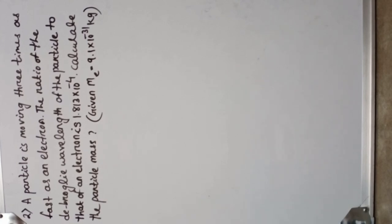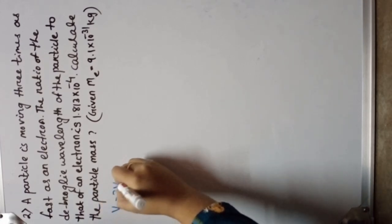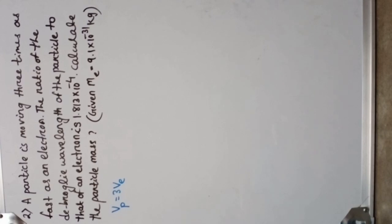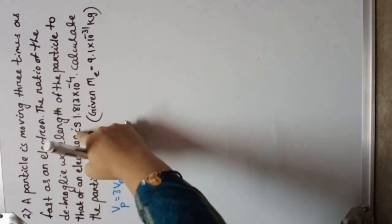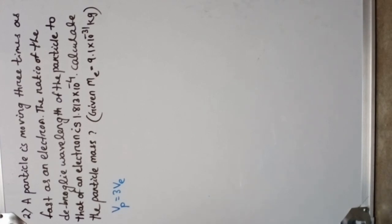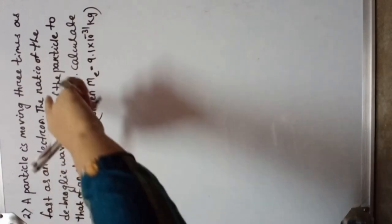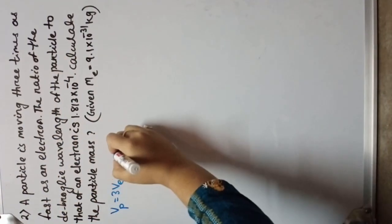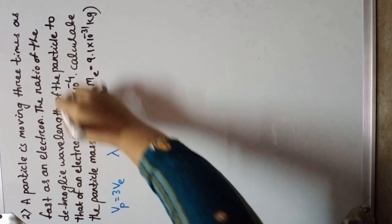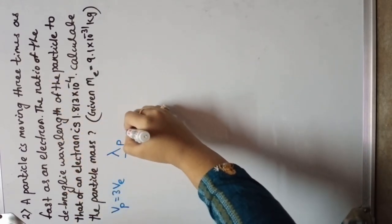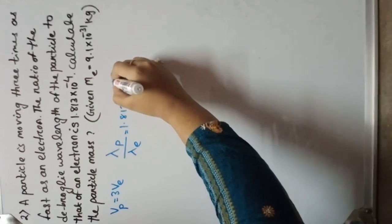Another question: A particle is moving three times as fast as an electron. The ratio of the de Broglie wavelength of the particle to that of an electron is 1.813 into 10 to the power minus 4. Calculate the particle mass.